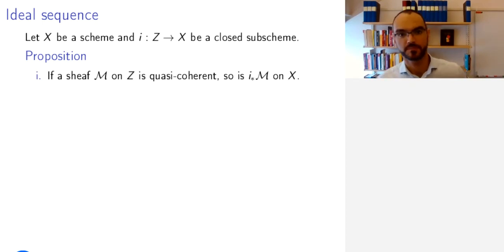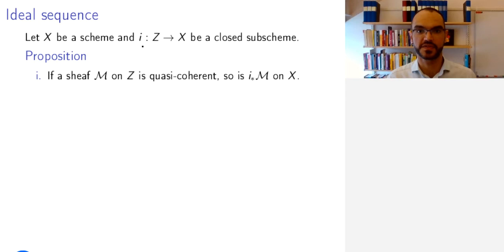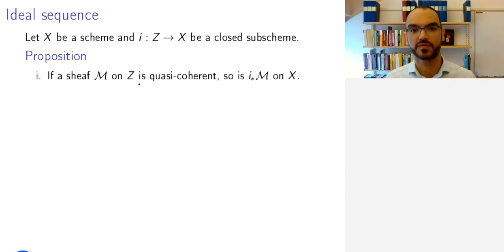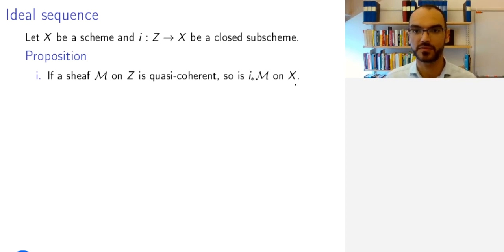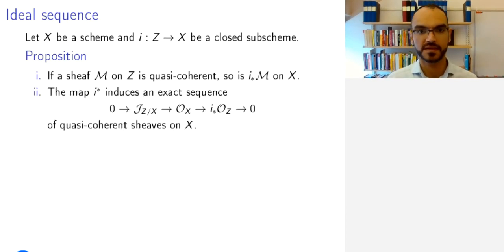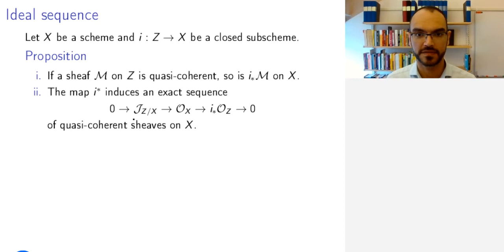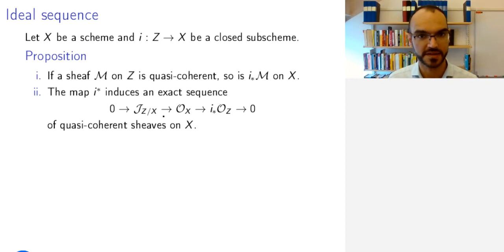Now let's see why this is useful. Take a scheme X and a closed subscheme Z, and denote the closed embedding by i. Then first, if M is a quasi-coherent sheaf of modules on Z, then the push forward of M along i is a quasi-coherent sheaf of modules on X. Using this, the map i-star associated to i induces an exact sequence of quasi-coherent sheaves on X. Specifically, there is a quasi-coherent sheaf J_{Z/X} such that this sequence with i-star is an exact sequence of quasi-coherent sheaves.